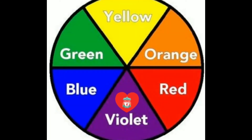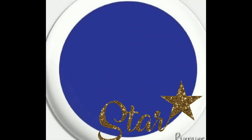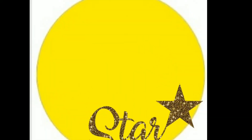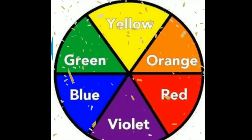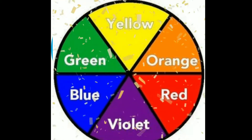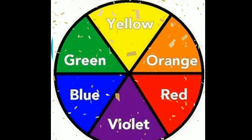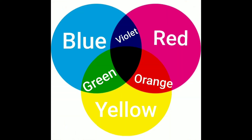All colors begin with three: blue, red, and yellow. Combining one color with another creates a second set of colors called secondary colors, and these are violet, green, and orange.